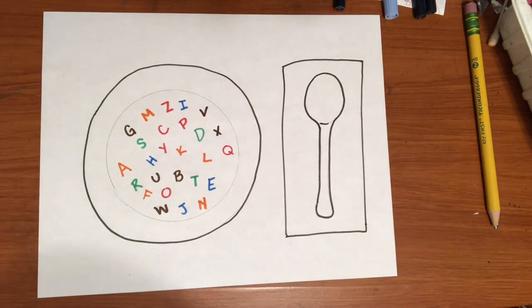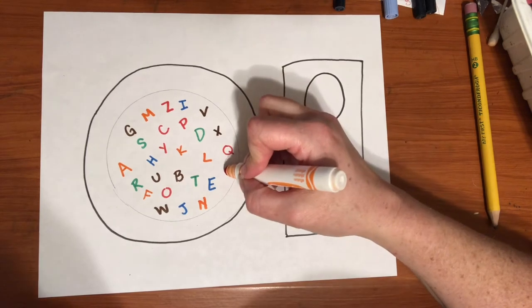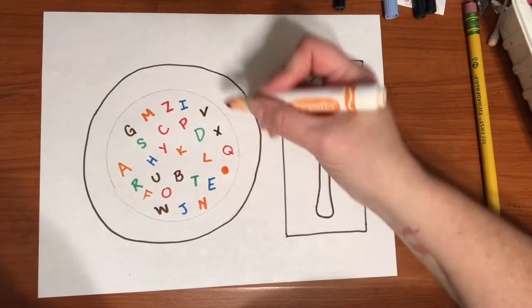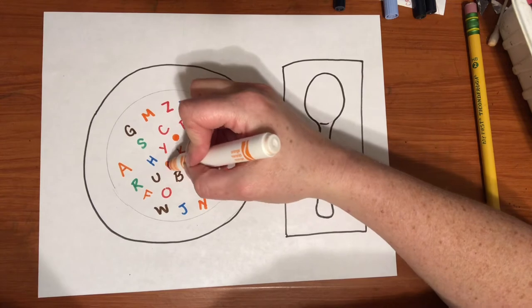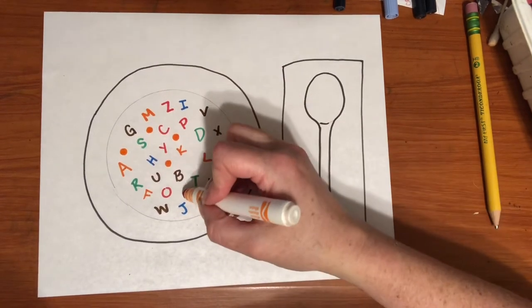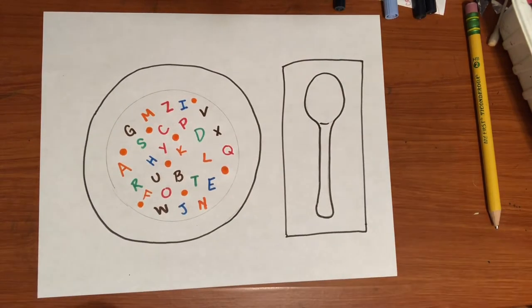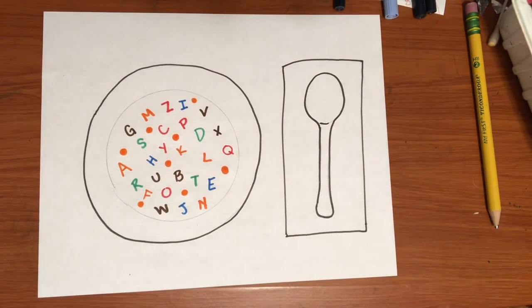I've got my whole alphabet floating in my alphabet soup. Now, I could take my orange and I could put in some round little carrots in there. And you can just kind of fill your bowl of soup with your different letters and your different vegetables.